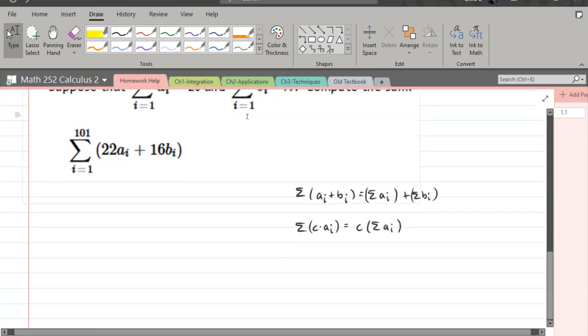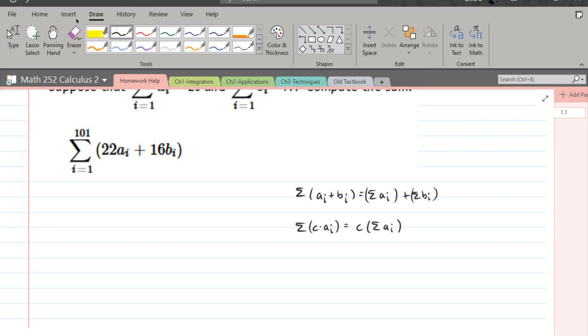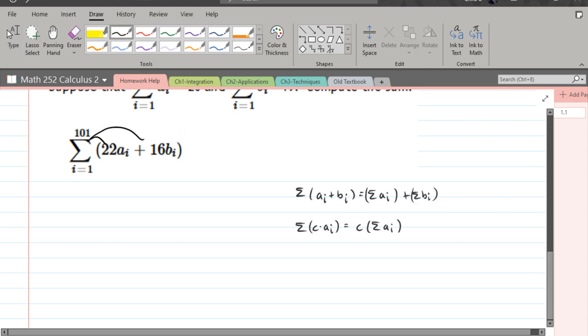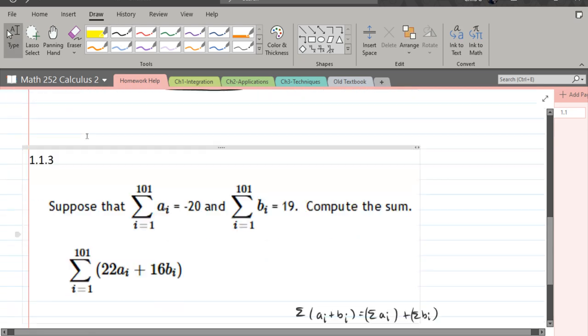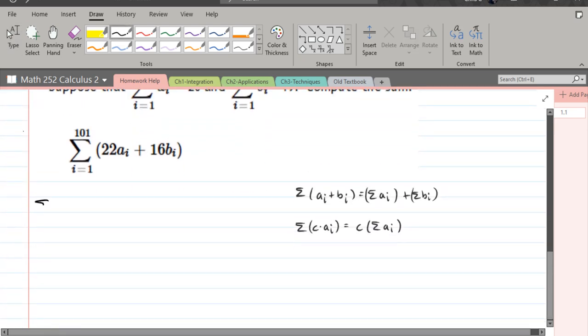And the first thing I'm going to do is use the summation. I'll rewrite it with two sums. So I'm basically going to distribute the summation to both of these. And what that's going to look like. I equals 1 to 101, 22 AI, plus summation I equals 1 to 101, 16 BI.